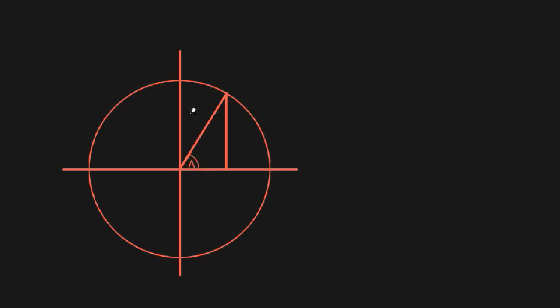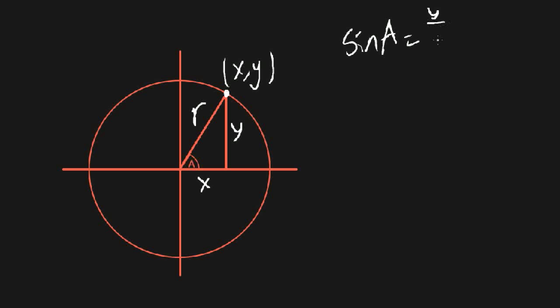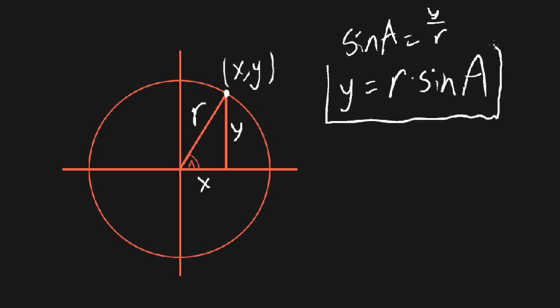There's another way to interpret and define trig functions — using a circle. Here I have a circle with radius R. The question is: what are the x and y coordinates of a point on the circle that makes a certain angle with the x-axis? Think about the triangle formed. The vertical side is your y coordinate, and the adjacent side is your x coordinate. Taking sine of angle A gives opposite over hypotenuse, which is y over R, so y equals R times sine of A.